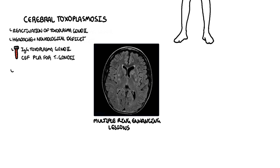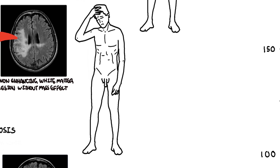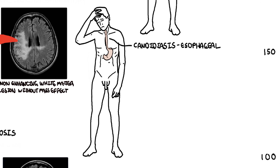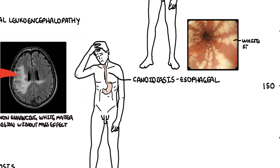Treatment for cerebral toxoplasmosis is sulfadiazine and pyrimethamine. HIV patients are typically on trimethoprim and sulfamethoxazole prophylaxis against both cerebral toxoplasmosis and pneumocystis. Another AIDS-defining condition in HIV patients with a CD4 count less than 100 is esophageal candidiasis, which on endoscopy shows white streaks along the esophagus. The typical presentation is dysphagia and odynophagia — pain when swallowing. Treatment is the antifungal fluconazole.